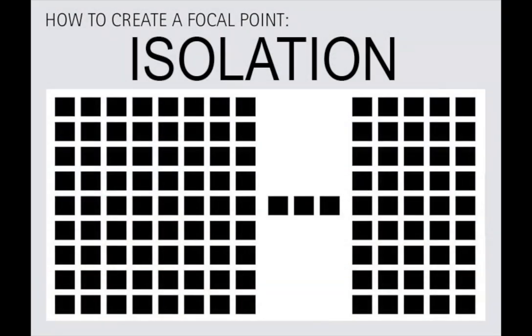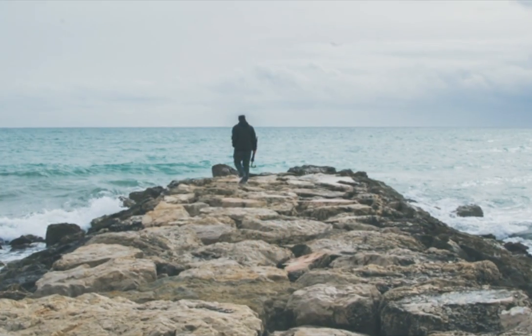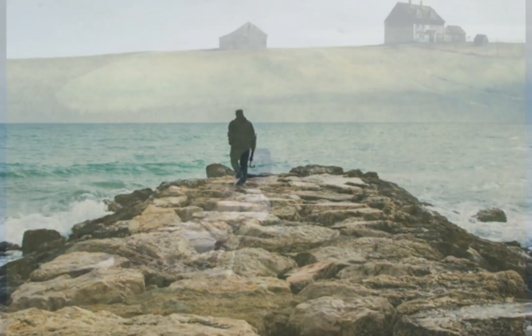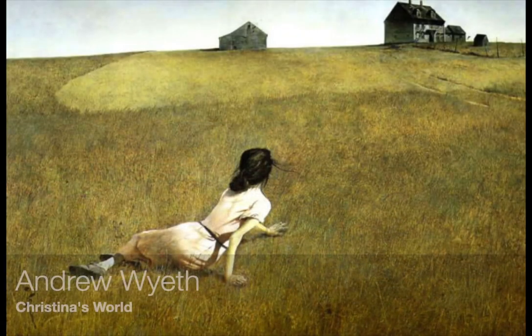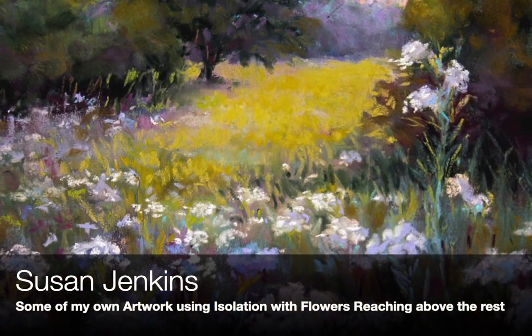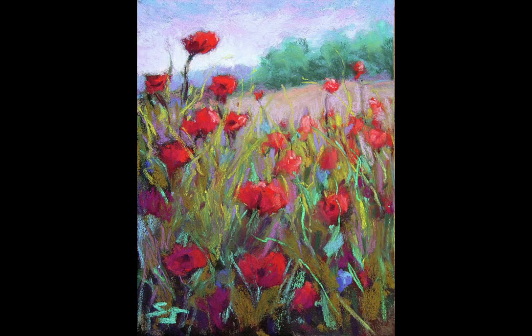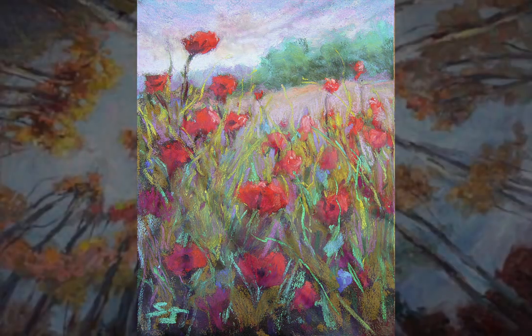The next technique in creating a focal point is isolation. Taking one object or a small grouping of objects away from the main body of elements is a very powerful way to create a focal point in your artwork. As you can see in this Andrew Wyeth painting — and it doesn't have to be this extreme — you can take even a field of flowers and isolate a small grouping or a single flower to create a sense of isolation from the rest.